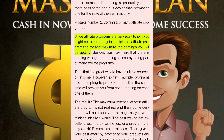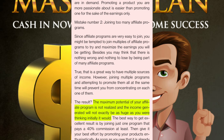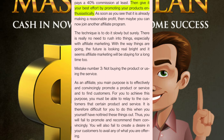Mistake number two: joining too many affiliate programs. Since affiliate programs are very easy to join, you might be tempted to join multiples to try and maximize earnings. While that is a great way to have multiple sources of income, joining multiple programs and attempting to promote them all at the same time will prevent you from concentrating on each one of them. The result: the maximum potential of your affiliate program is not realized. The best way to get excellent results is by joining just one program that pays at least 40% commission, then give it your best effort. As soon as you see that it is already making a reasonable profit, then maybe you can join another affiliate program.